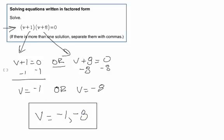You can always check by plugging in. If we substitute v = -1: (-1 + 1)(-1 + 8). Negative 1 plus 1 is 0, and 0 times anything is 0. That works out.